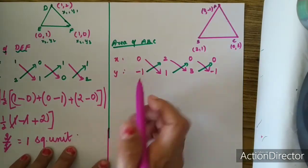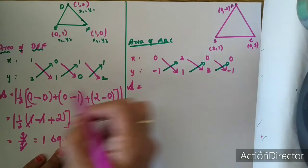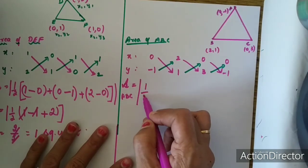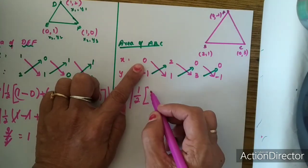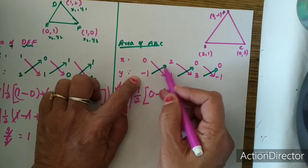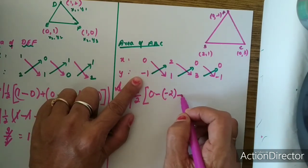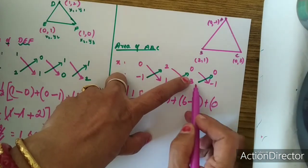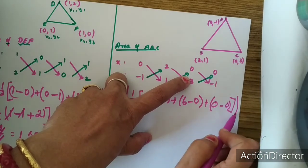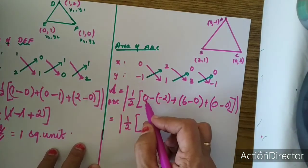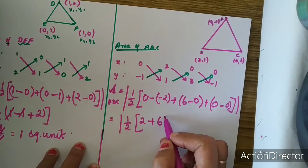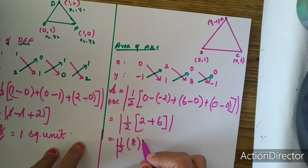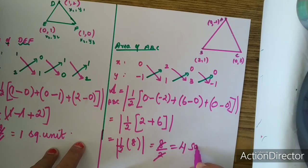The same way I am going to find the area of triangle ABC. Area of triangle ABC equals modulus of half into: pink arrows — 0 into 1 is 0; subtract green arrow — minus 1 into 2 is minus 2. Again 2 into 3 is 6, minus 1 into 0 is 0. Plus 0 into minus 1 is 0, and 3 into 0 is also 0. So this equals half into 0 minus of minus 2, which is 2, plus 6 equals 8. So 8 divided by 2 is equal to 4 square units.